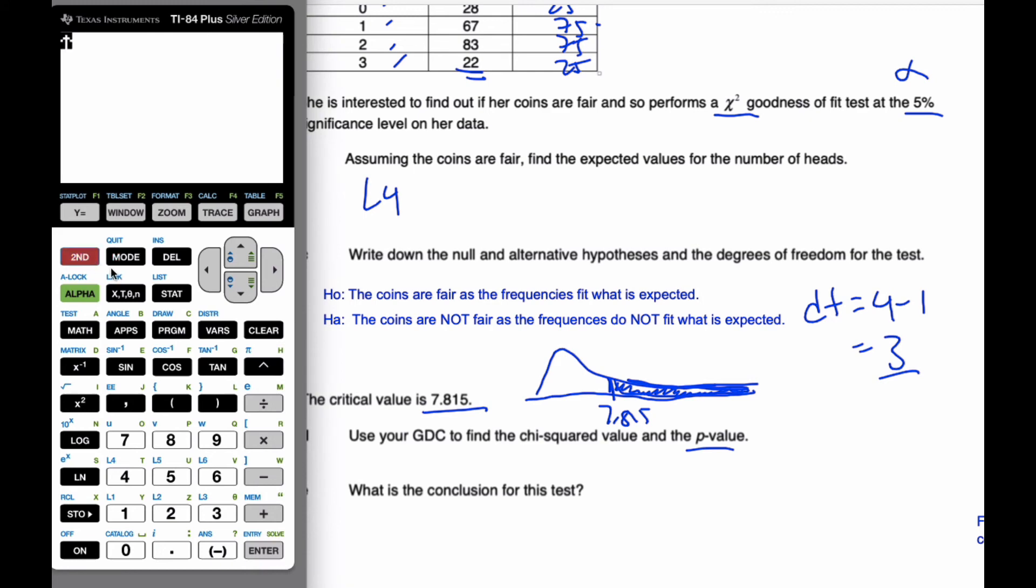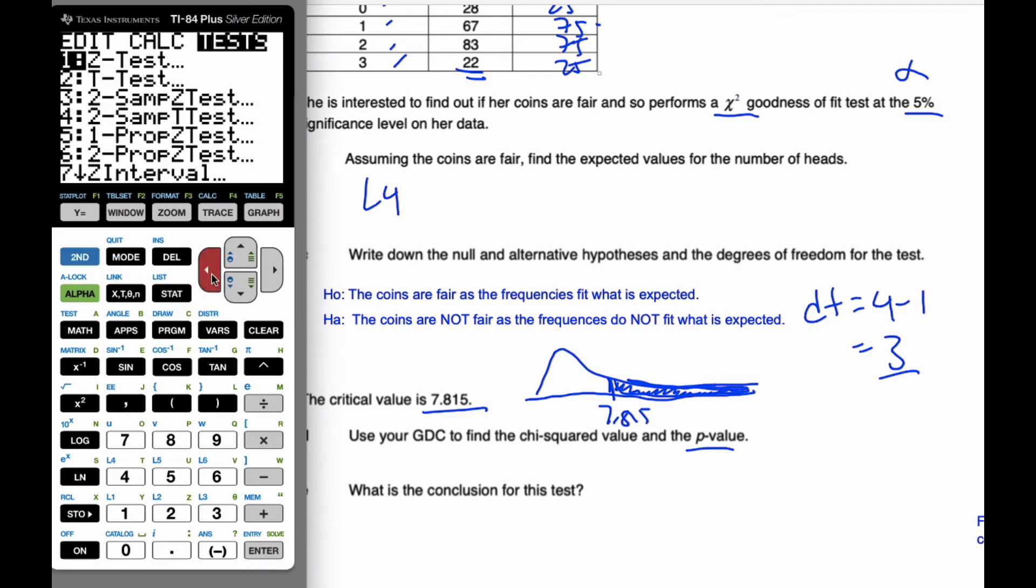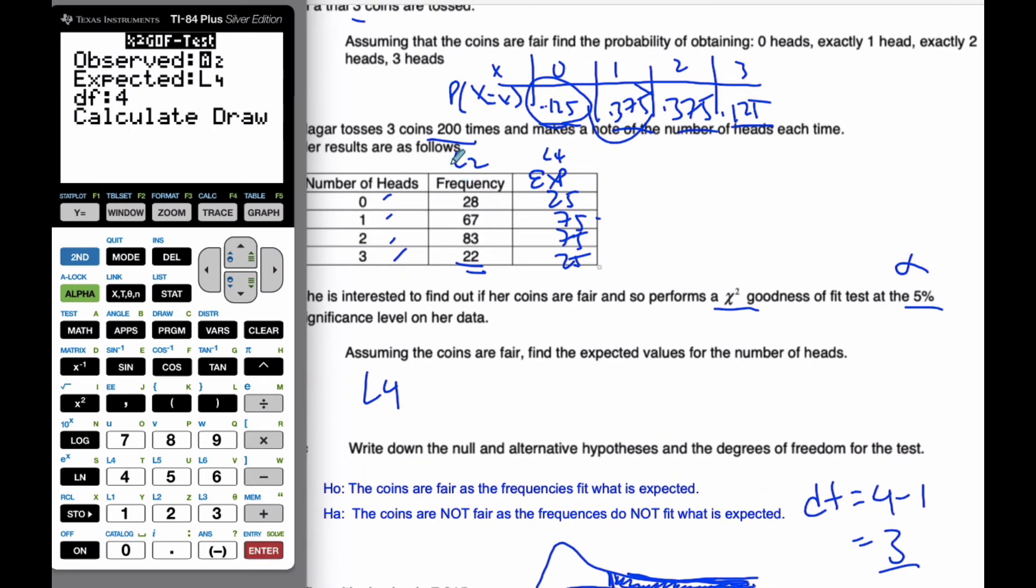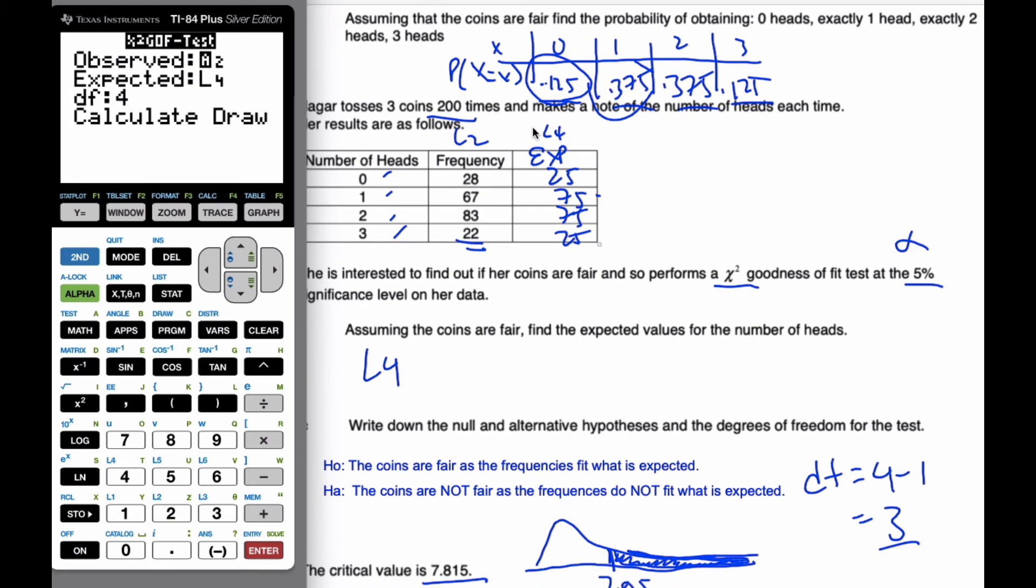So, let's find the p-value and the chi-squared value and let us see what happens. So, if I leave here, I'm going to go to tests. And I'm going to do a chi-squared goodness of fit test. I know my observed values are in L2, and my expected is in L4.